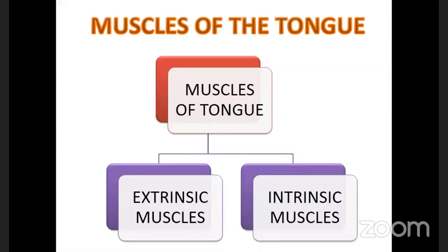Now we move on to the muscles of the tongue, which are divided into two groups: extrinsic and intrinsic. Please remember: the intrinsic muscles are mainly meant to alter the shape of the tongue, and the extrinsic muscles are mainly meant to alter the position of the tongue.